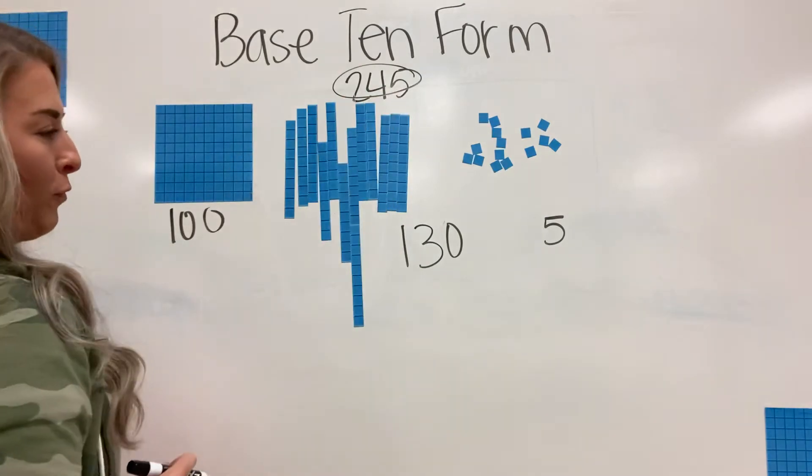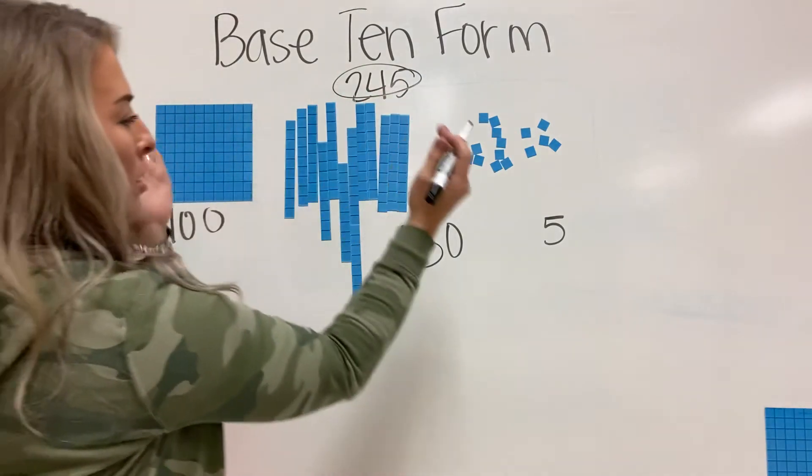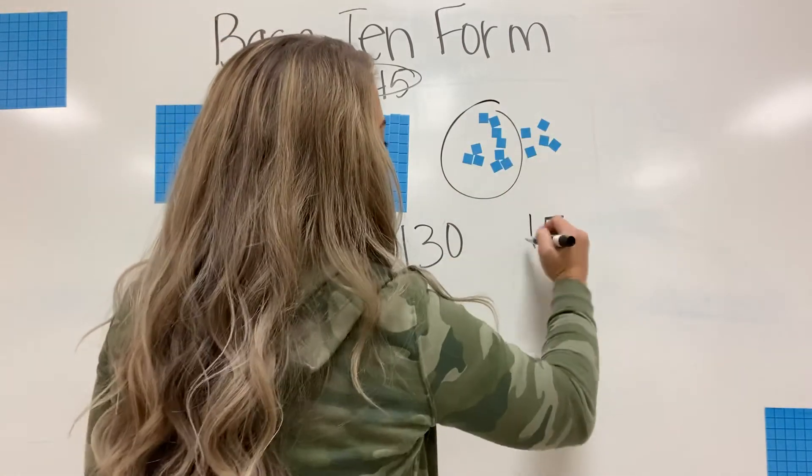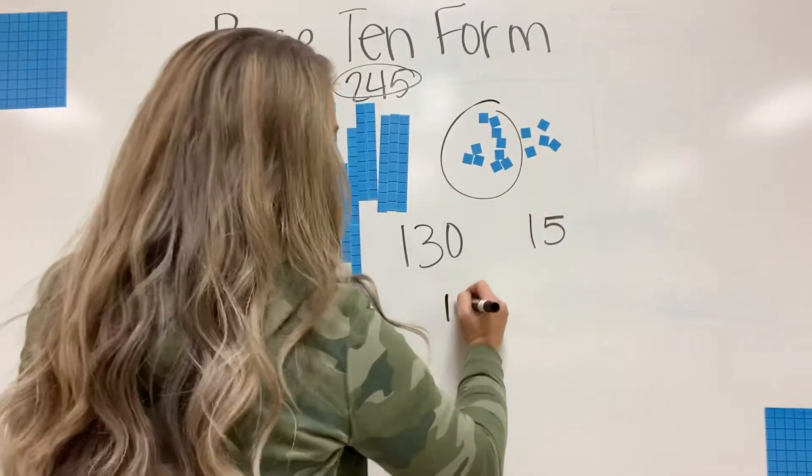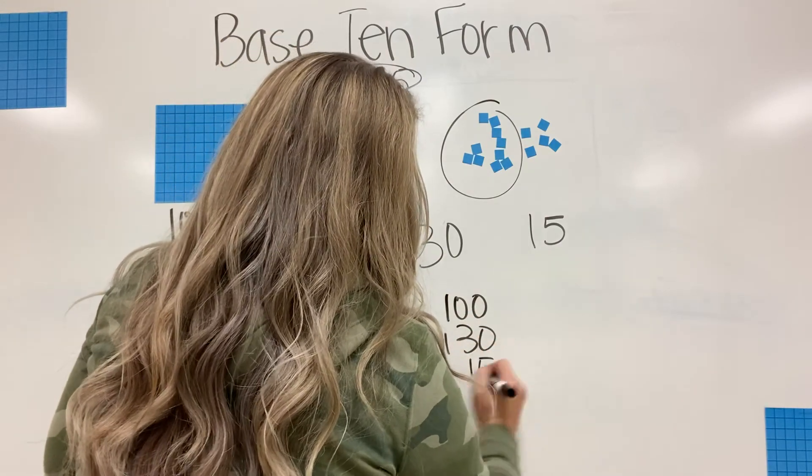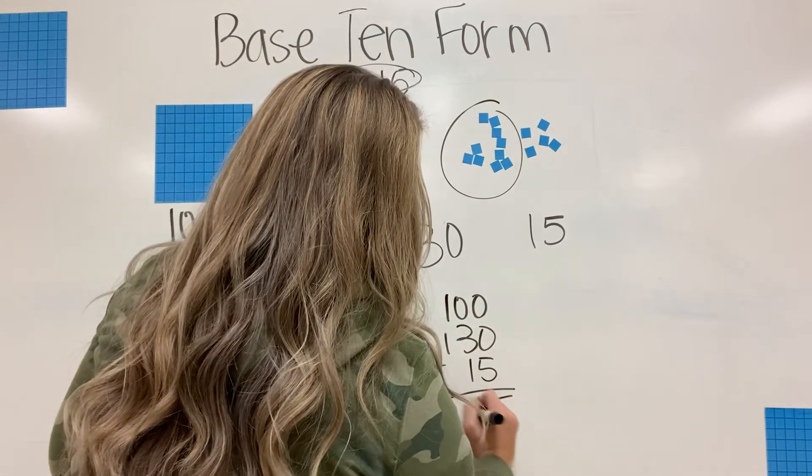I still have 245 because now I still have 100, 130 tens, and now I have 10 and five, which makes 15. And if I were to add these together, I get 245.